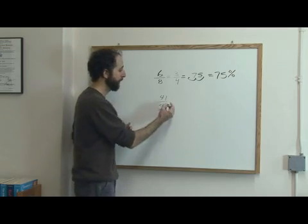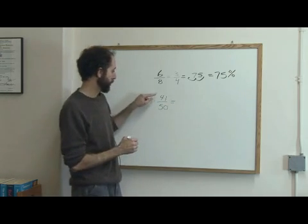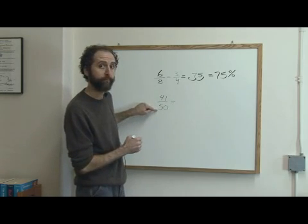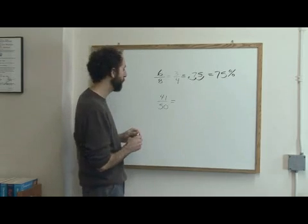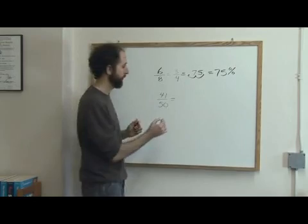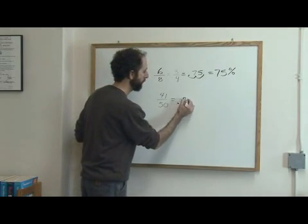So if you got 41 out of 50, again you just turn that fraction into a decimal. You divide the top by the bottom. If you do that on your calculator, 41 divided by 50, you'll get .82.